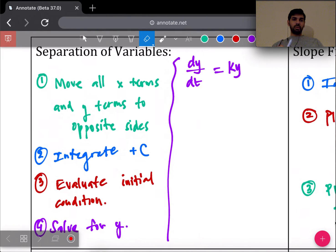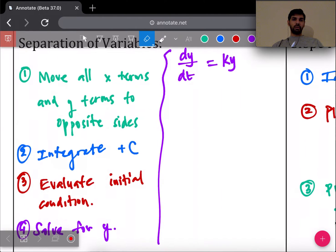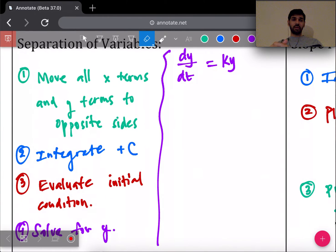This first box right here is probably the highest expected thing that I would see on the test: separation of variables. With separation of variables, your goal is to figure out what is the original equation for y, and you're given the differential equation which involves the derivative dy/dx or dy/dt.